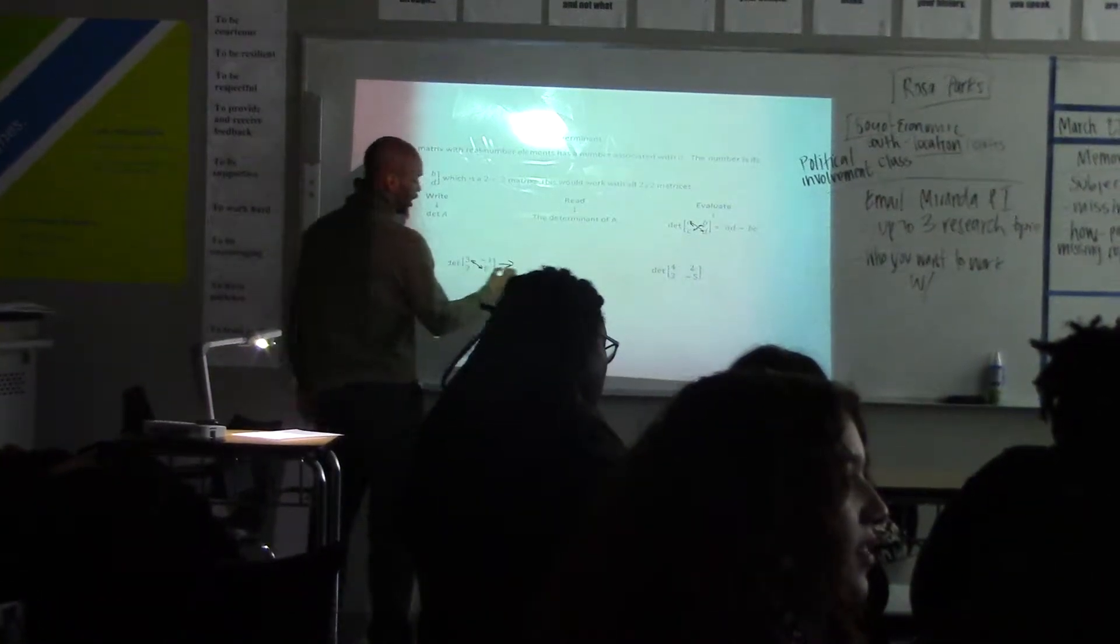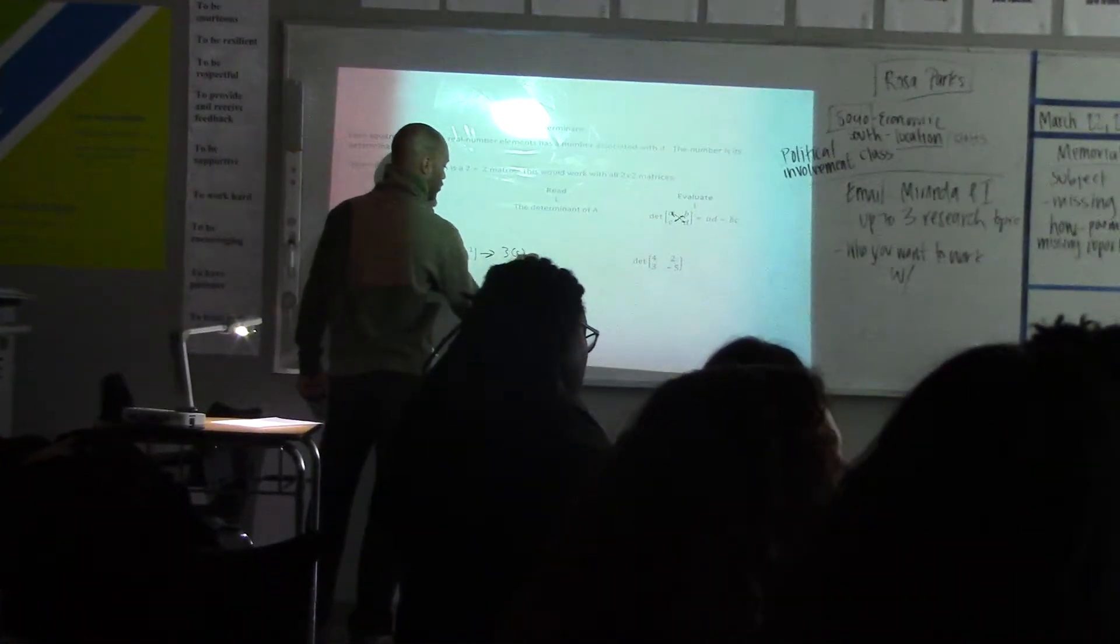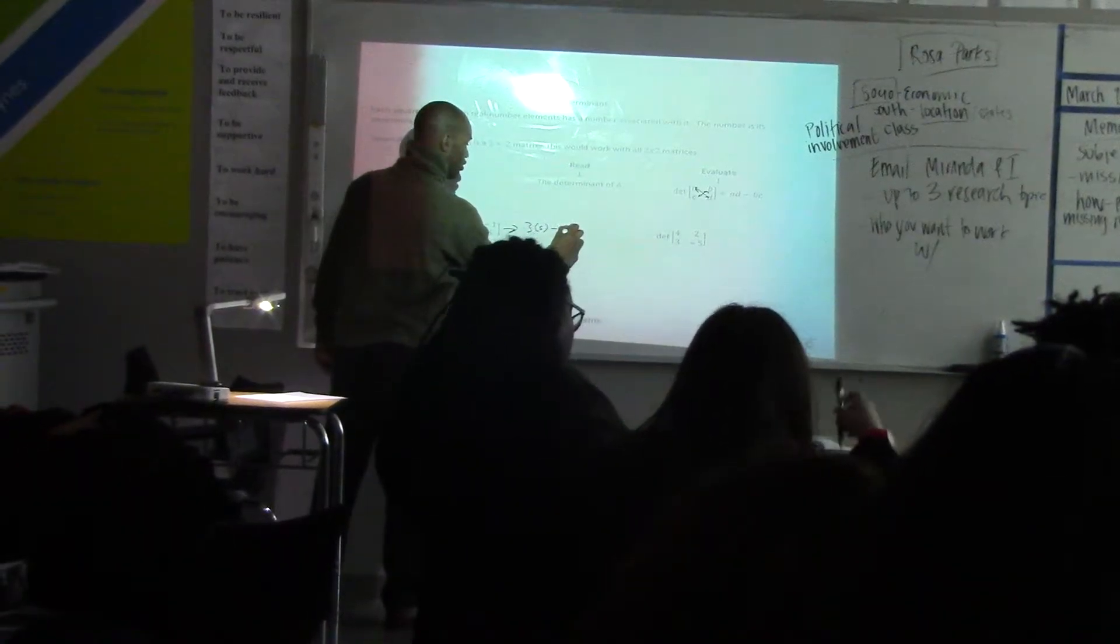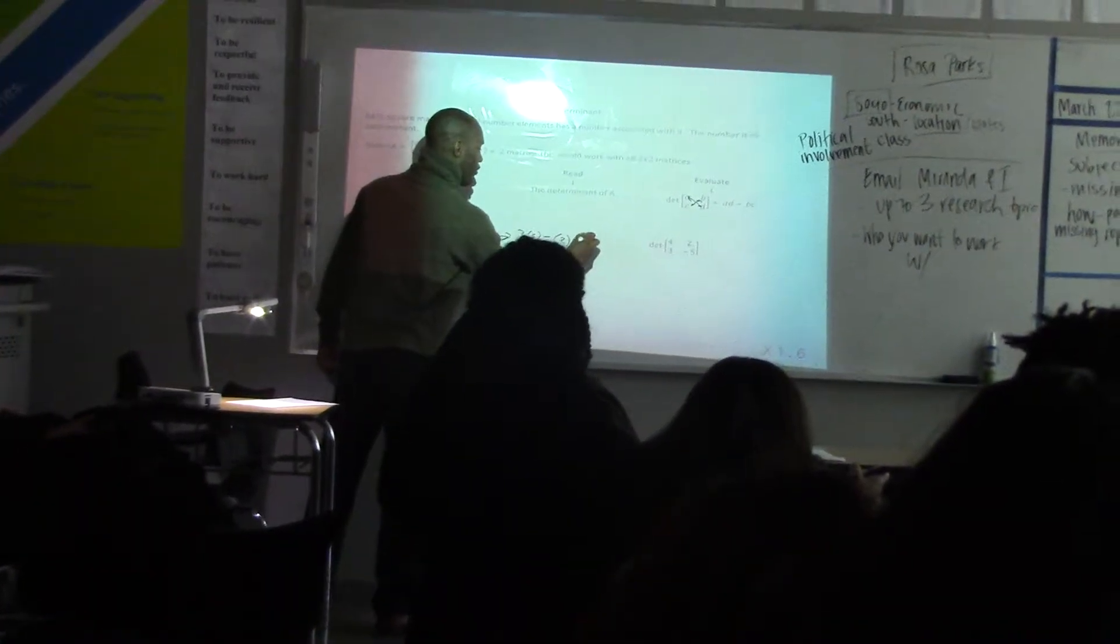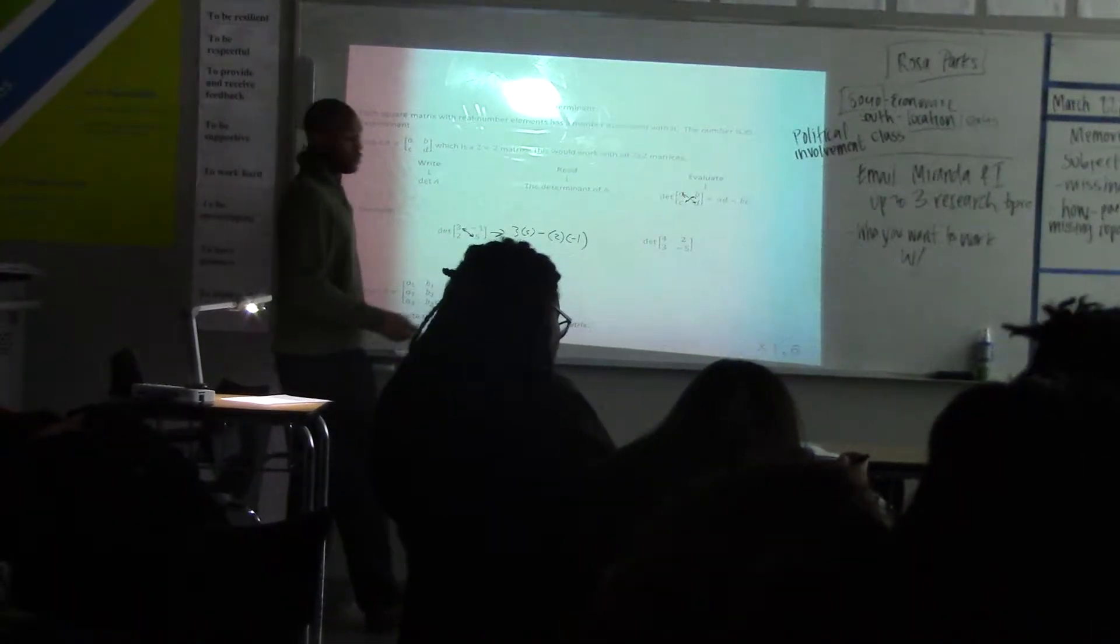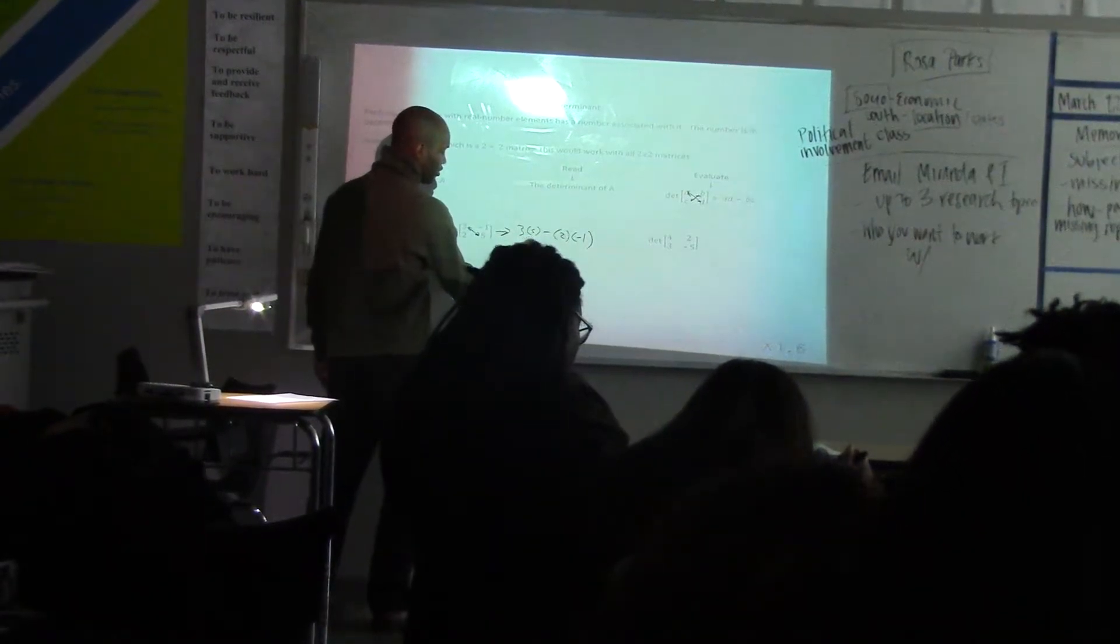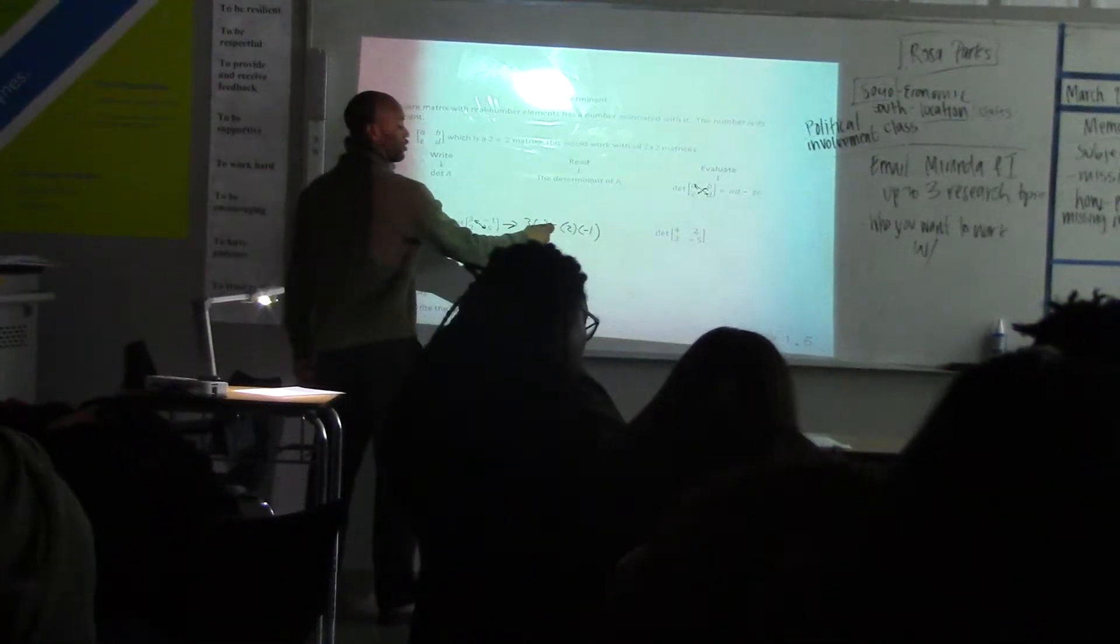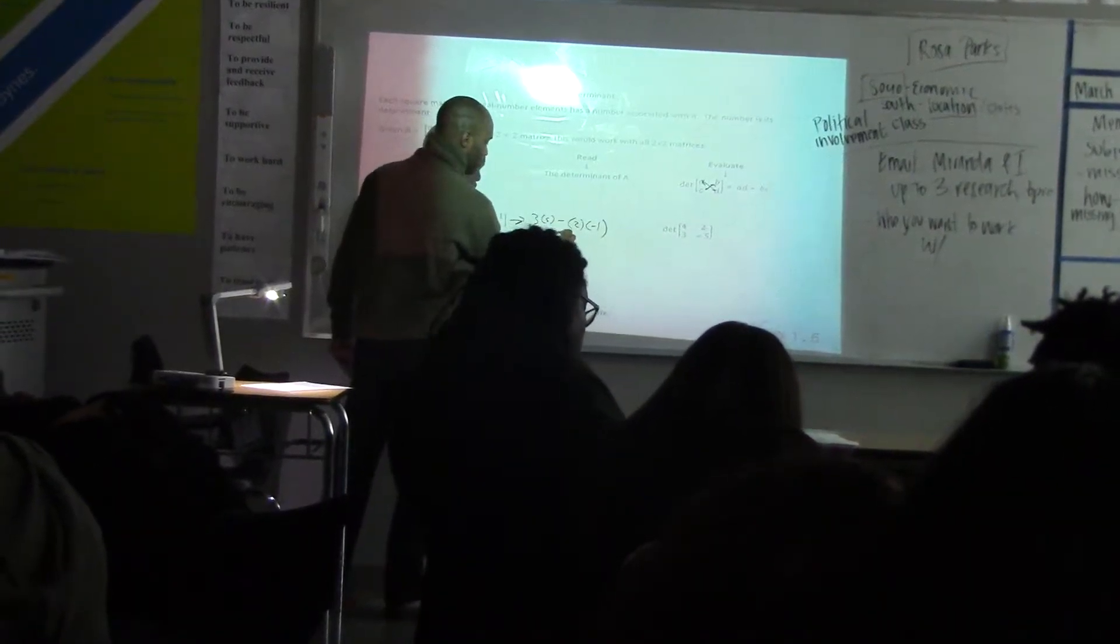So an example would be, we have 3, 2, negative 1, 5. So 3 times 5, subtract 2 times negative 1.